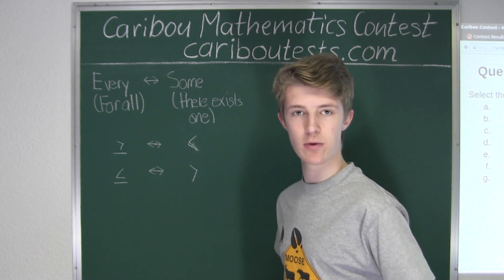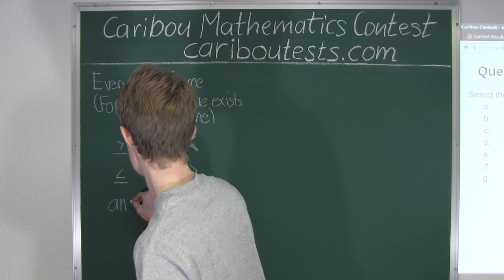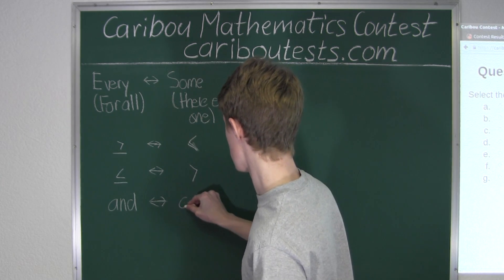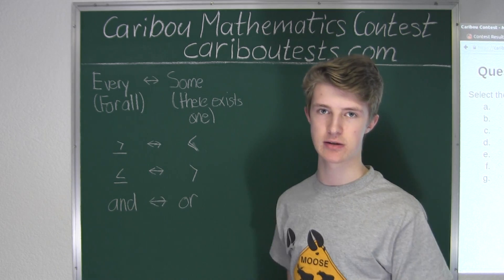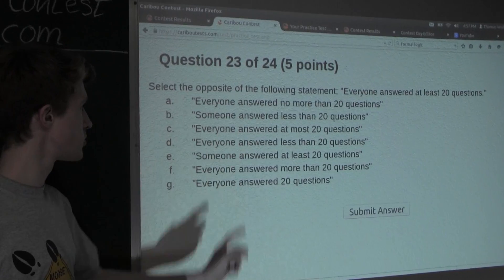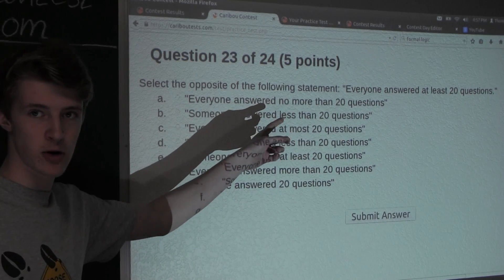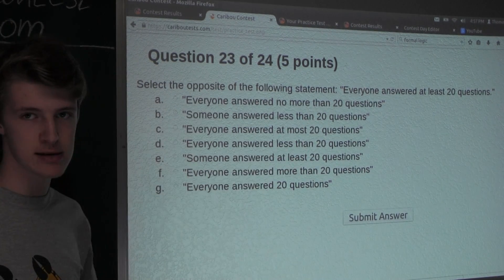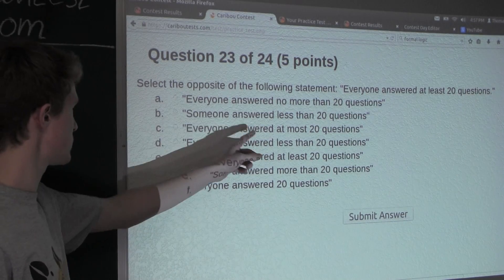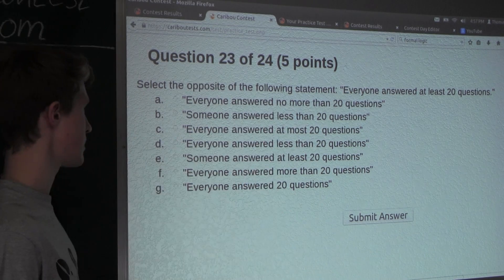And finally, the last rule: anywhere in the question, if we see 'and,' that will then go to the word 'or,' and again that is vice versa. So now, looking at the question, we could use these general rules. For 'everyone,' that will go to 'someone' for the opposite, and 'at least' means 'greater than or equal to.' The opposite of that would be 'less than,' which is exactly what we have in option B — 'someone' instead of 'everyone,' and 'less than' instead of 'at least.'